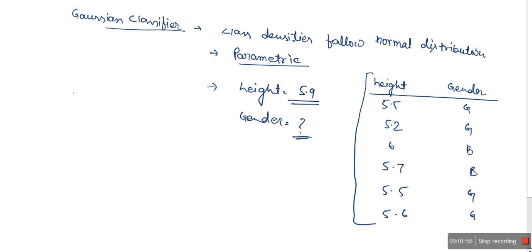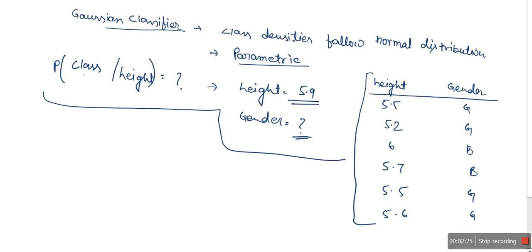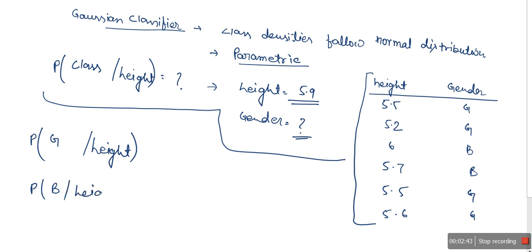This height could be any number. We need to find out this probability — we are given height and we need to find out gender, so the class. We have two classes. What Gaussian classifier does is: we are going to compute the probability that given height, what is the probability of class girl, and what is the probability of class boy given height. These two probabilities I need to compute.